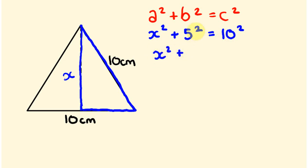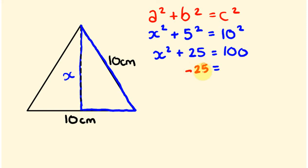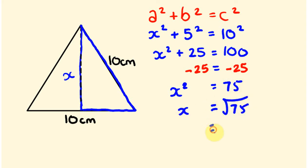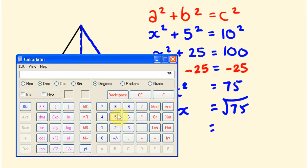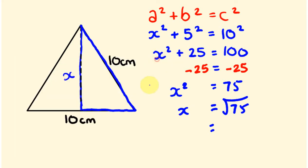So x squared plus 5 squared — which is 25 — equals 10 squared, which is 100. To get x squared by itself, we take 25 off both sides. That leaves x squared equals 100 minus 25, which is 75. So x equals the square root of 75. Using a calculator, that's 8.66. So the height of our triangle is 8.66 centimeters.